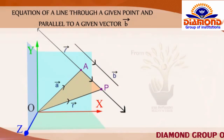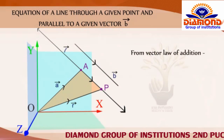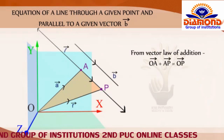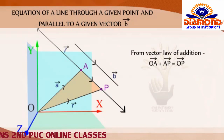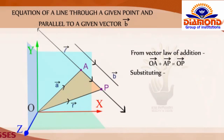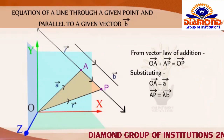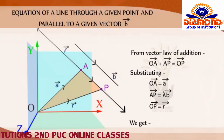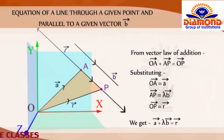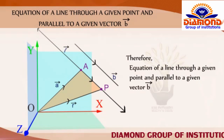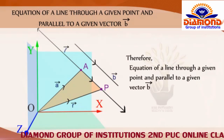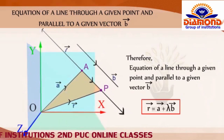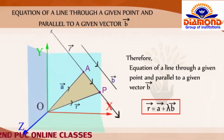From the vector law of addition, OA bar plus AP bar equals OP bar. Substituting the corresponding values — OA bar equals A bar, AP bar equals lambda B bar, and OP bar equals R bar — we get A bar plus lambda B bar equals R bar. Therefore, the equation of a line through a given point and parallel to the given vector B bar is: R bar equals A bar plus lambda B bar.